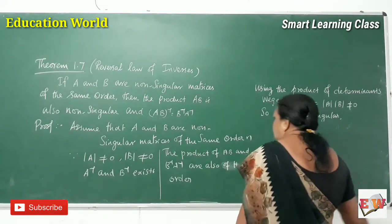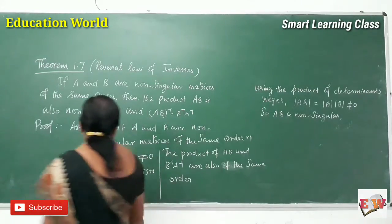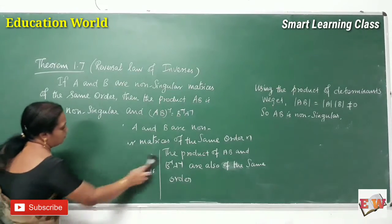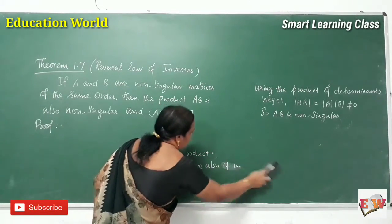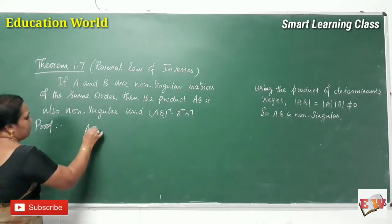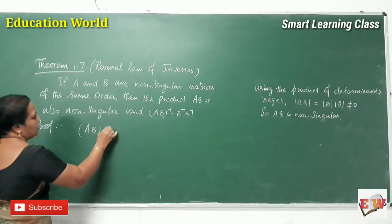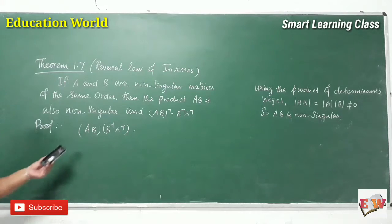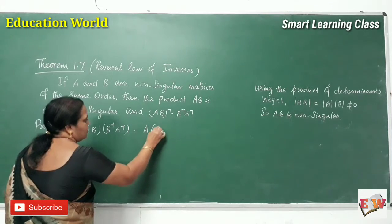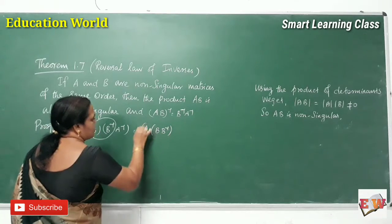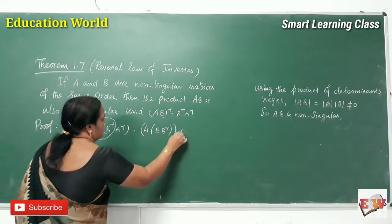Now we are going to prove that (AB)⁻¹ is equal to B⁻¹A⁻¹. For that, I am going to multiply AB into B⁻¹A⁻¹. Now I am going to regroup this using matrix multiplication as A times (B · B⁻¹) times A⁻¹.